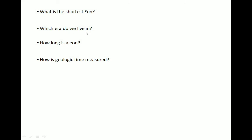The second question: which era do we live in? We live in the Holocene, sometimes called the Recent epoch, Quaternary period, Cenozoic era, and Phanerozoic eon. The third question: how long is an eon? An eon goes back to the Greek word for age. In science, an eon is about a billion years.